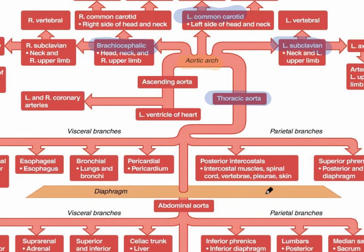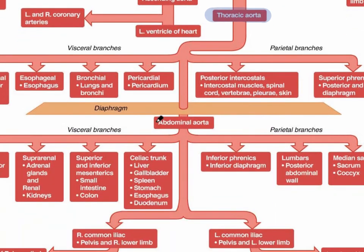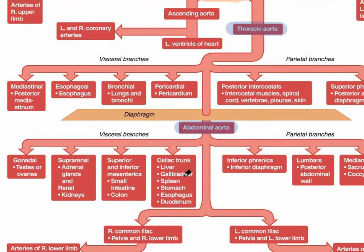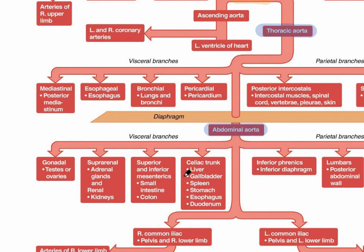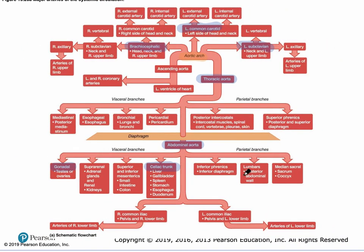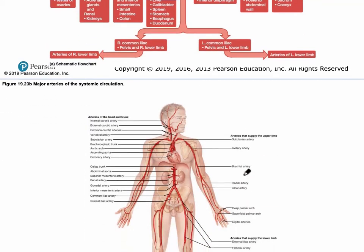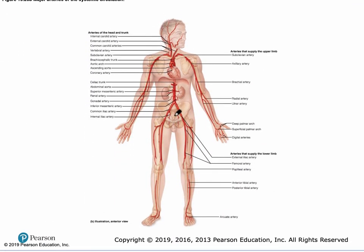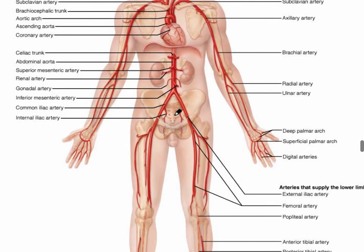It's referred to as the descending aorta, also called the thoracic aorta because it's located in the thoracic cavity. Once it descends below the diaphragm, we refer to it as the abdominal aorta — but it's still the same main blood vessel. It's important to know the main branches from the abdominal aorta, including the celiac trunk and the gonadal artery, which we'll look at on the next slide.